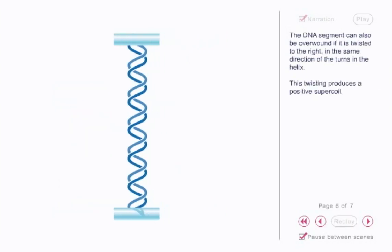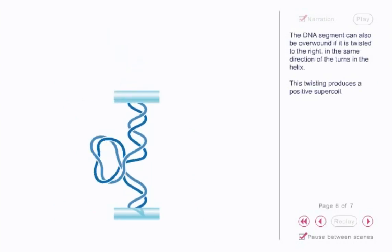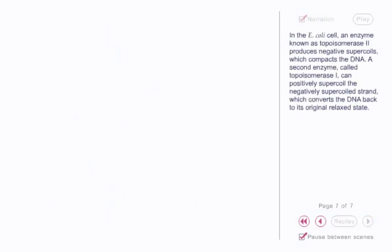The DNA segment can also be overwound if it is twisted to the right, in the same direction of the turns in the helix.